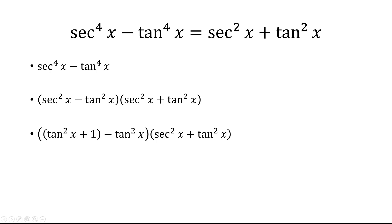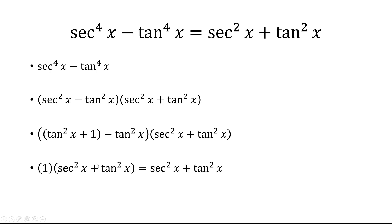So we have tangent squared minus tangent squared — those are going to cancel, and we're just left with 1 here. And then 1 times secant squared plus tangent squared is just equal to secant squared plus tangent squared.